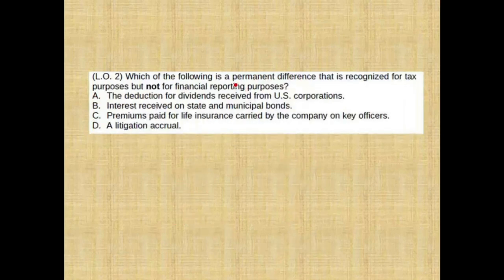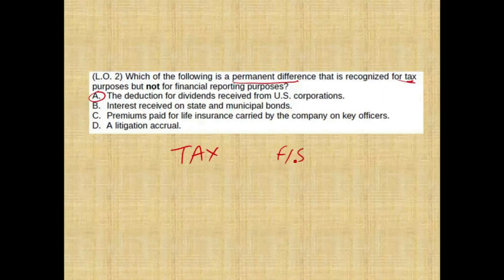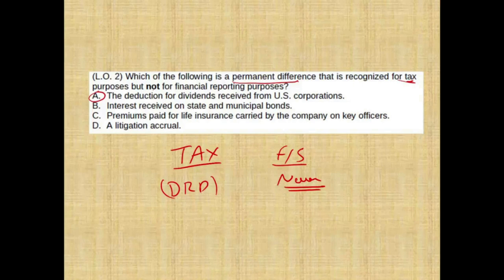Which of the following is a permanent difference that is recognized for tax purposes but not for financial accounting purposes? The deduction for dividends received from U.S. corporations — that's the answer. The dividend received deduction is a deduction taken on your tax return, never shown on the financial statement. That's exactly what they're asking.